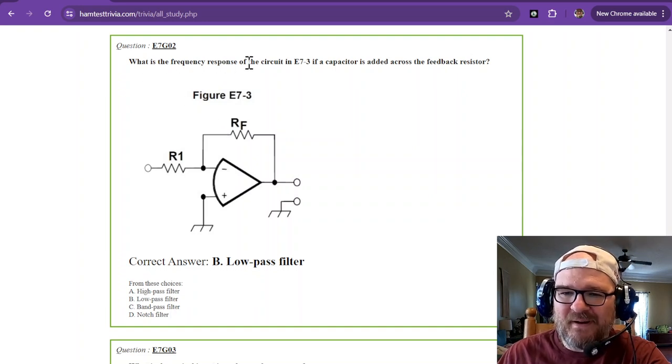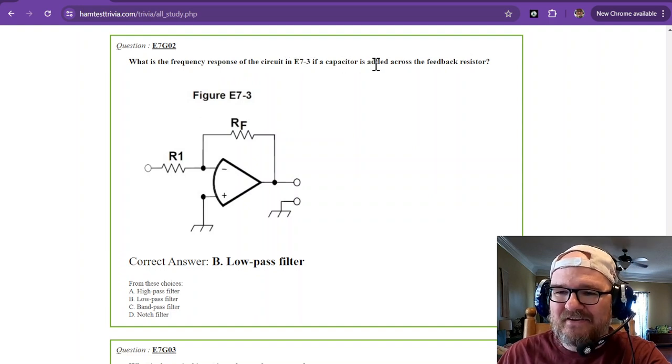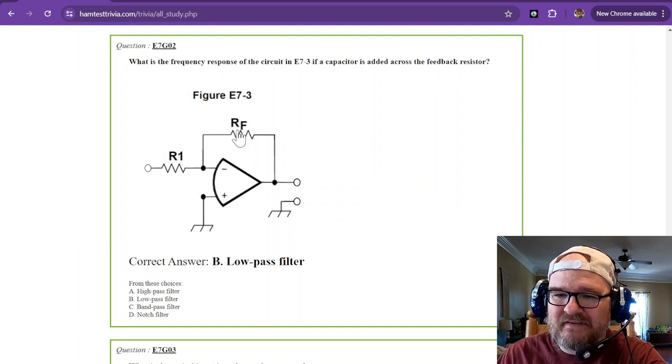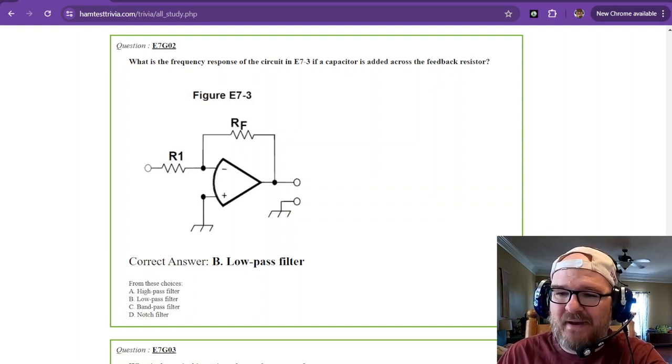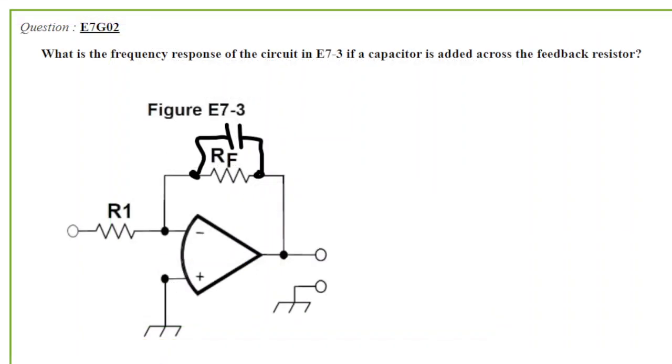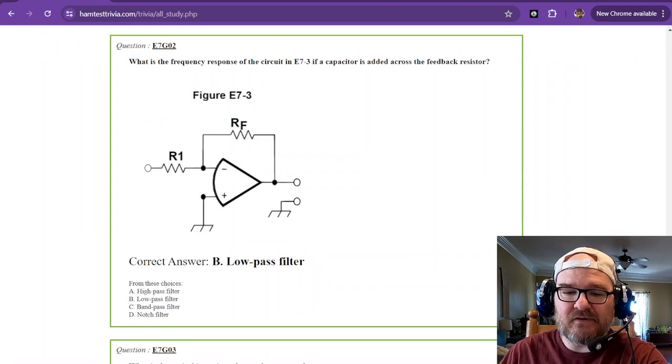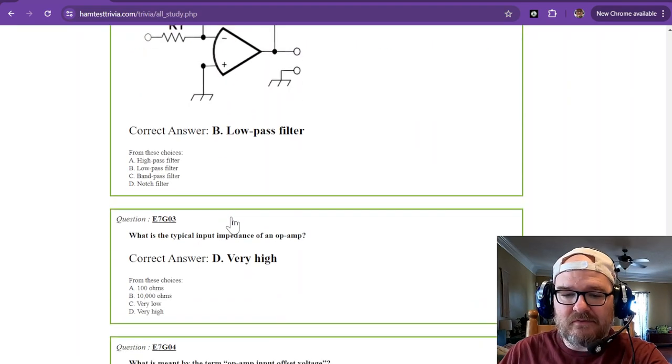What is the frequency response of the circuit in E7-3 if a capacitor is added across the feedback resistor? Now RF is the feedback resistor. The answer is a low-pass filter. So I kind of drew you the filter over the top of it so you can see it. That's a low-pass filter all day long. So that's your answer. Low-pass filter.